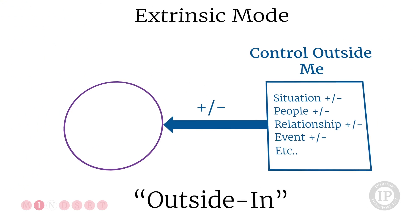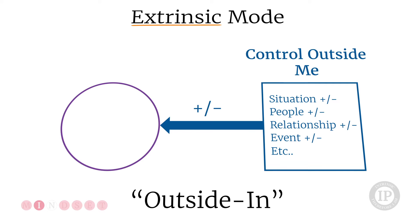The other mode, the extrinsic mode, so outside in. We basically react or experience what the situation may be bringing to us or trigger in us from people, relationship. So we may react with disappointment, so an emotion, disappointment, anger, and so on.